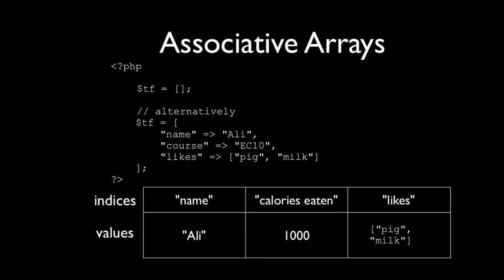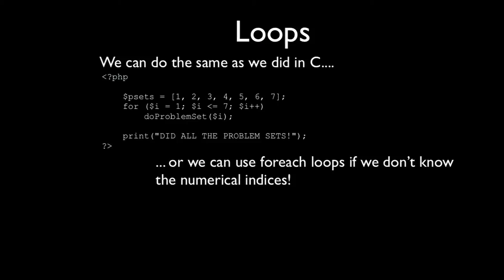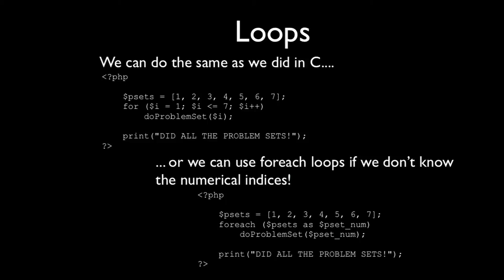In C we loop over arrays from index 0 to the end. But for associative arrays we don't know the numerical indices, so PHP uses foreach loops. The syntax is: foreach ($pset as $psetNum) — PHP iterates through every value in the array, assigning each one to the temporary variable $psetNum in turn, guaranteeing every value is visited.